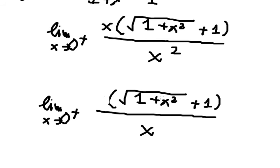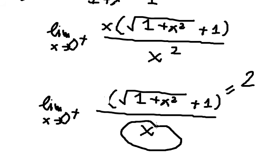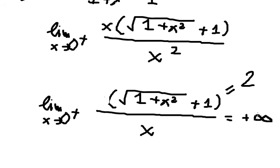Now if we substitute 0, the numerator gives us 2 times the square root of (1 plus 1), which equals 2. The denominator gives us 0 from the positive side, so 2 divided by 0 from the positive side gives positive infinity. That is the answer for question 2.